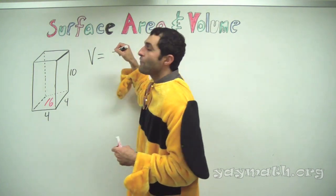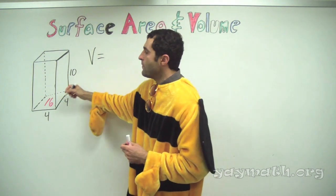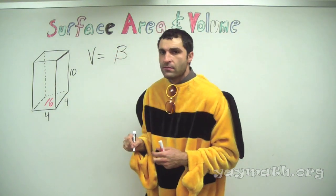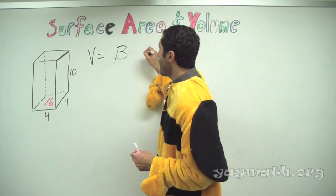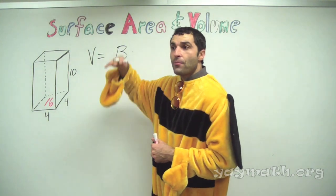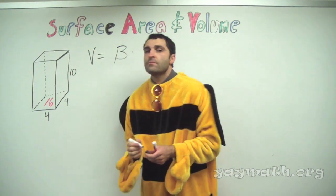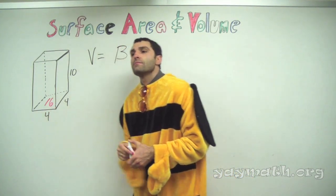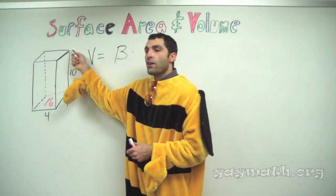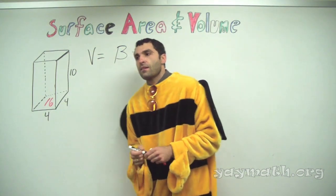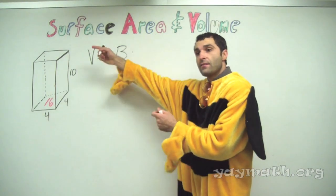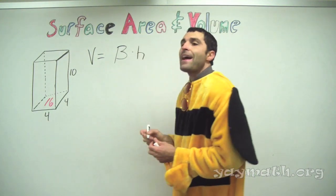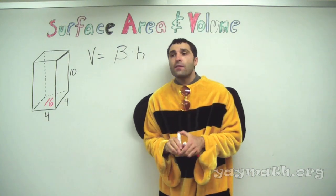The formula for the volume of any prism is simply the area of the base — capital B — times how many up it goes. In this case, 16 times 10. What do you think the 10 is called? The height. And that's all it is for any prism.